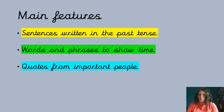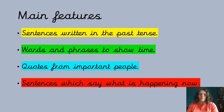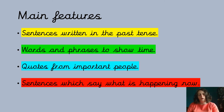Quotes from important people — we all know what a quote is because we did this last week. That's just what people say about events. Sometimes they're in speech marks, which are two punctuation marks floating in the air — a quote from what someone said about this story, this event. And the last thing are sentences which say what's happening now. So for example, in the Great Fire of London, we might talk about everything that's burned down and what's going to happen next. 'London will need to be rebuilt' — so that's what's happening now. 'London will be cleaned up and start to be rebuilt.'